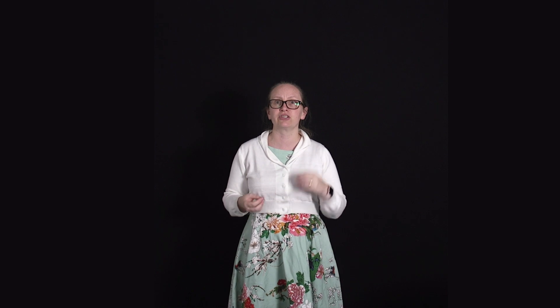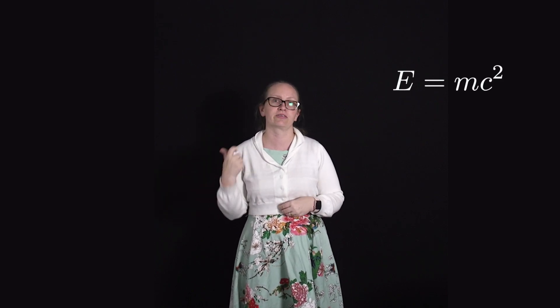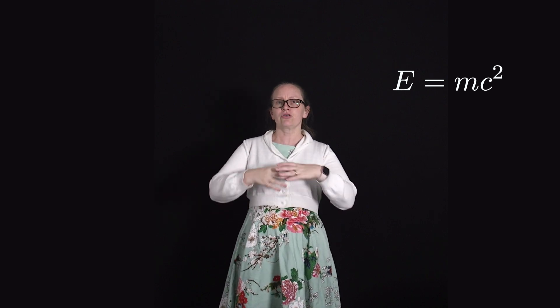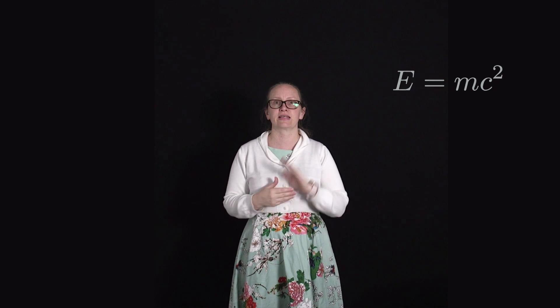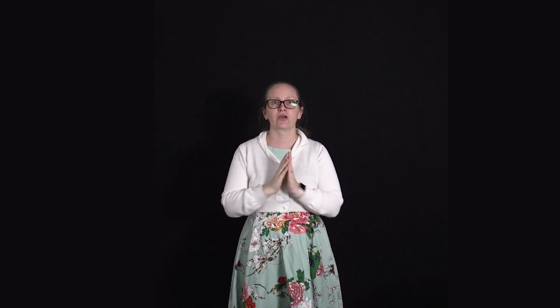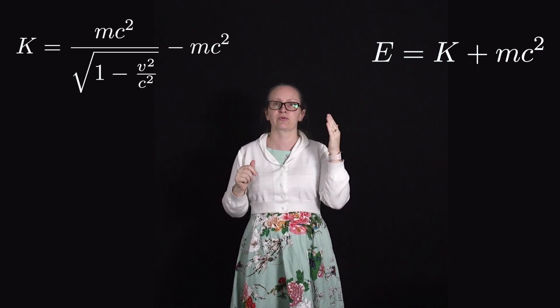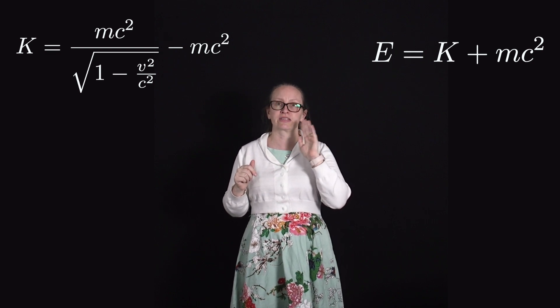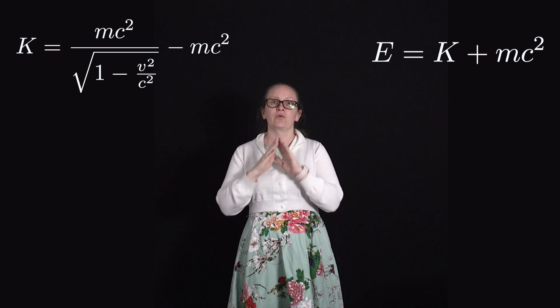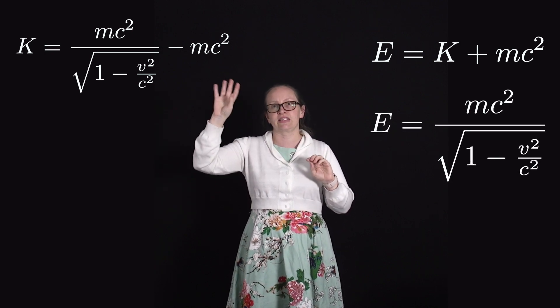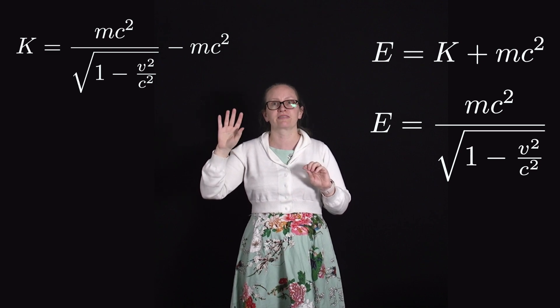Einstein realized that kinetic energy wasn't the only type of energy a particle could have — the particle also had energy stored within its mass. He described this with his famous equation e equals mc squared, where m is the rest mass of the particle. So the total energy a particle possesses equals its kinetic energy plus the rest mass energy mc squared. We can write e equals k plus mc squared, and since k equals mc squared over the square root of (1 minus v squared on c squared) minus mc squared, we end up with e equals mc squared over the square root of (1 minus v squared on c squared).